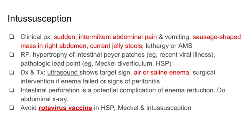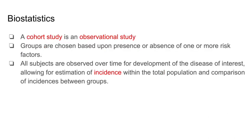A cohort study is an observational study where groups are chosen based on the presence or absence of an exposure or risk factor, then followed to see if they develop a specific disease. From a cohort study, you can calculate or estimate the incidence of a disease, and relative risk can also be calculated.